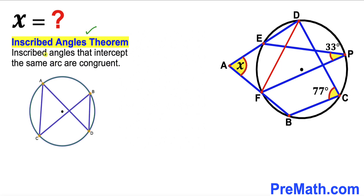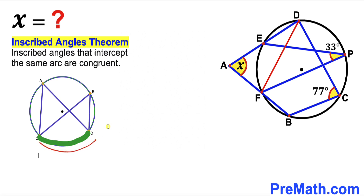Let's recall the inscribed angles theorem: inscribed angles that intercept the same arc are congruent. For arc AB, the two angles intercepting it are both called alpha, so they are congruent. Likewise for arc CD, the two angles intercepting it are both called beta, so they are congruent as well.